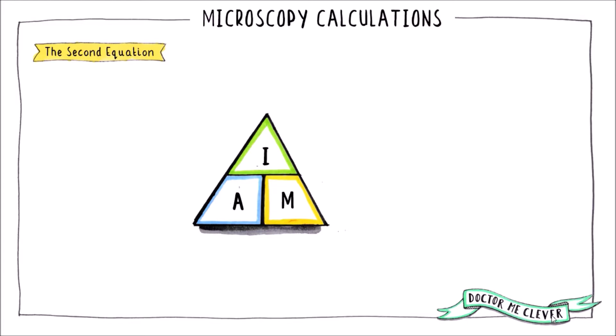So actual size equals image size divided by total magnification. Image size equals actual size times total magnification. And total magnification equals image size divided by actual size.